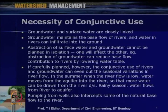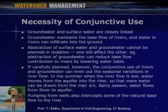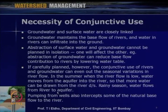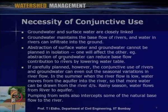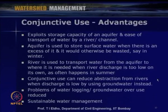If carefully planned, conjunctive use of rivers and groundwater can even out seasonal variations in river flow. Whenever more surface water is available, we can also recharge the aquifer system. In summer when river flow is low, water moves from the aquifer into the river, so more water can be drawn from rivers, especially on the downstream side. During the rainy season, water flows from river to aquifer when the head is rising. Pumping from wells also intercepts some of the natural base flow to the river. Due to all these interactions, conjunctive use is the best way of utilizing available water resources.